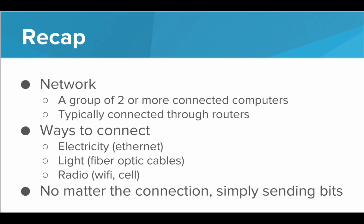So, to recap, a network is simply a group of two or more computers that are somehow connected. They're typically connected through routers. What do these connections look like? How do computers actually send bits from one computer to the other? Well, one way is electricity, for example ethernet. Another way is light, for example the fiber optic cables. And lastly, we can use radio. This is what's being used in Wi-Fi and cellular. No matter the connection, all you're doing is sending bits. It can be through radio waves, voltages, or light. That is what it boils down to: you're encoding the information you want to send in bits, sending it over the network, and then the zeros and ones will be reconstructed to produce the original data at the other end.